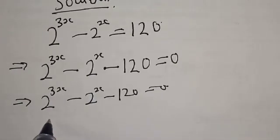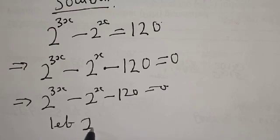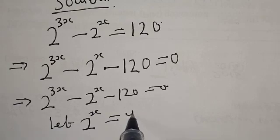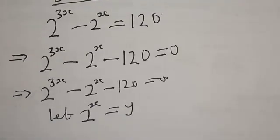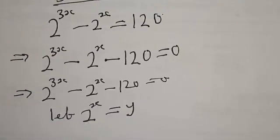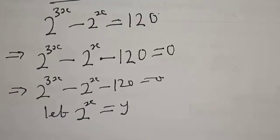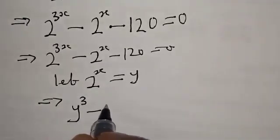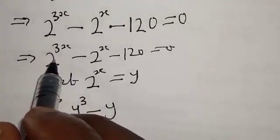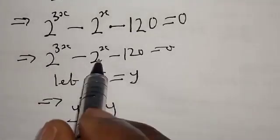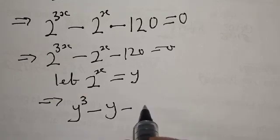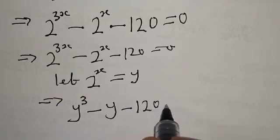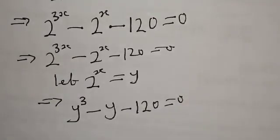We now let 2 raised to power X equal to Y. That is, anywhere you see 2 raised to power X, you put Y there. This implies that Y raised to power 3 minus Y minus 120 is equal to 0.